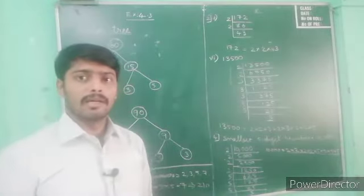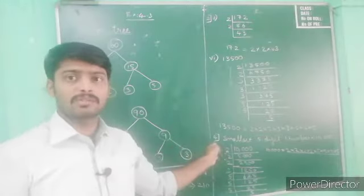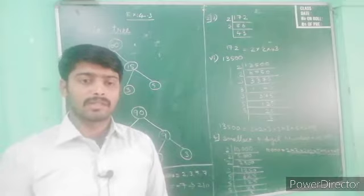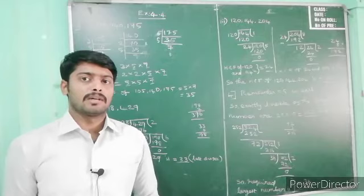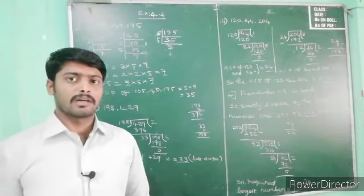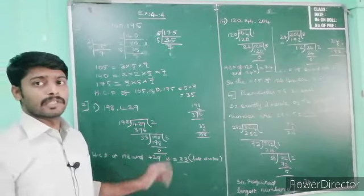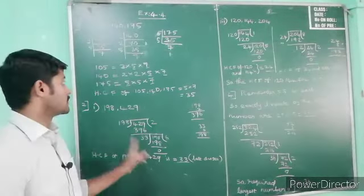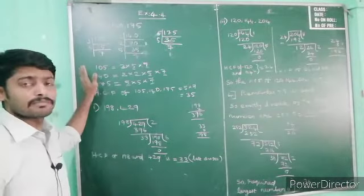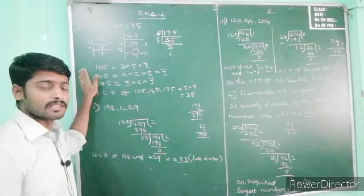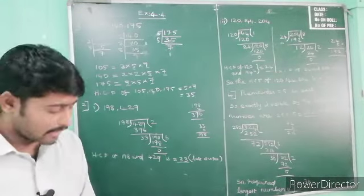Remaining problems you have to do as homework. Solve by your own so that it will be easy to understand. Today we are also going to see highest common factor. I already explained what is meant by highest common factor. Here we are going to find out the HCF of the given number. Here also two methods: first method is prime factorization method in HCF, and after that division method.